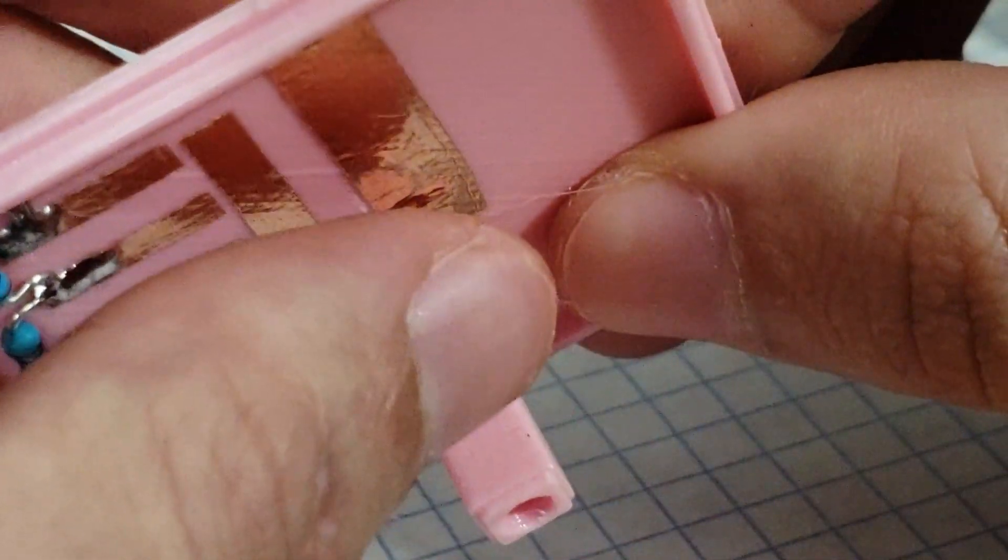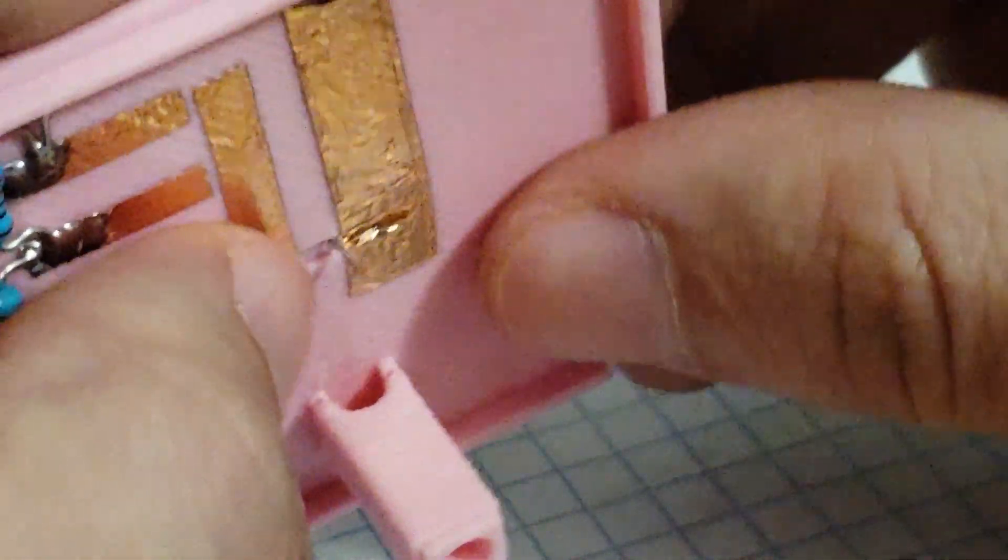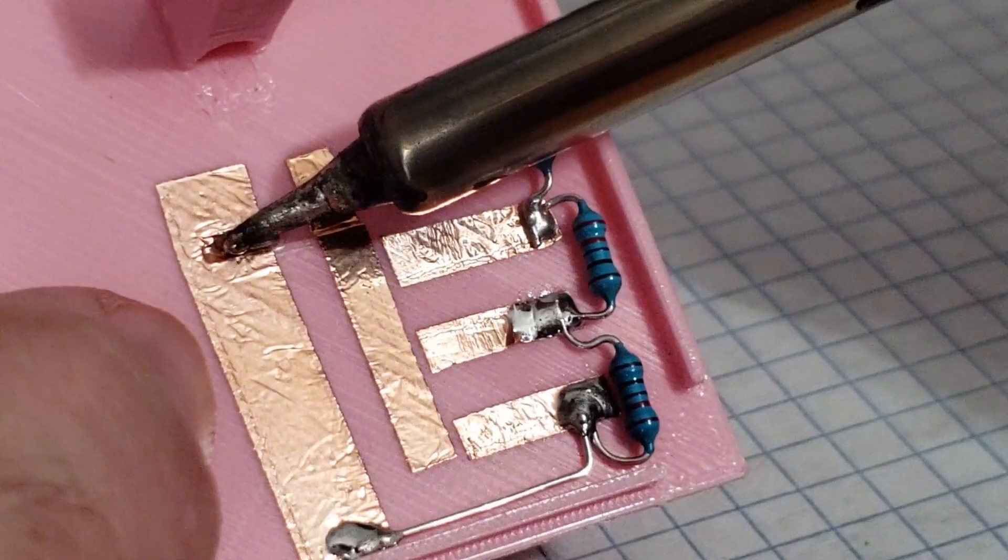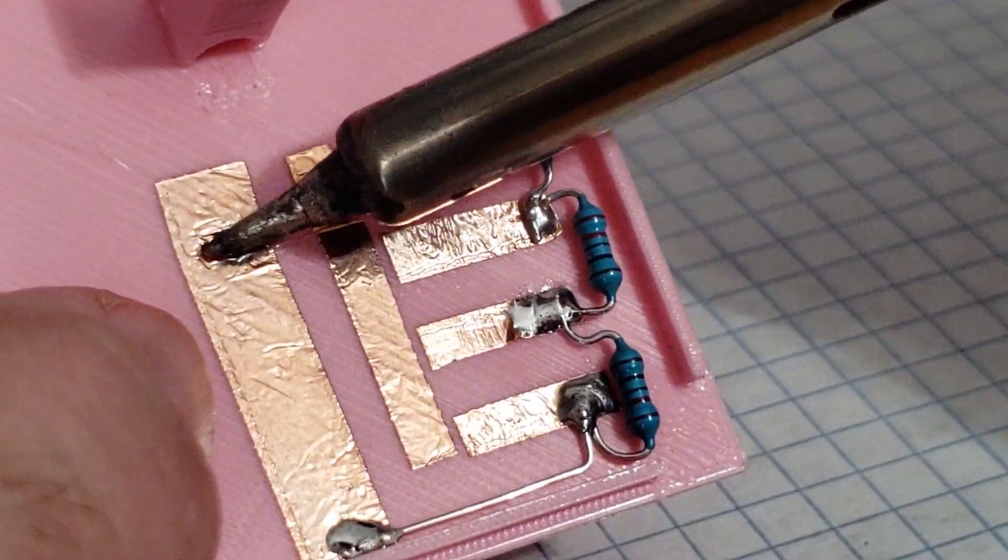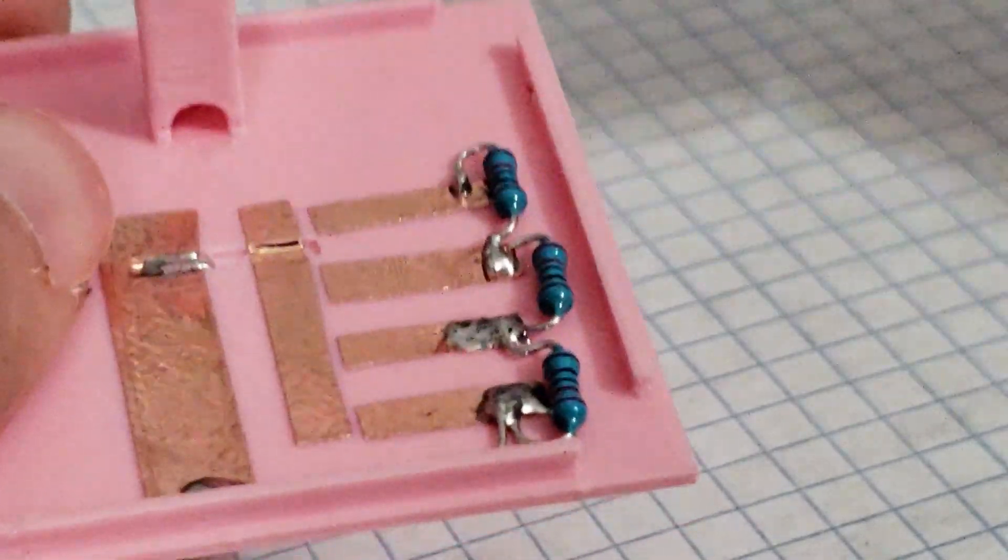Once it pokes through, you can freely move it and bend it onto the other pad. Once you have it bent in, you can just solder it onto the pad itself. Make sure it's flush by melting it into the plastic.